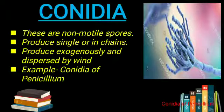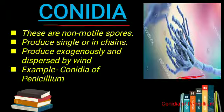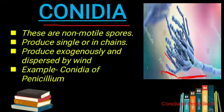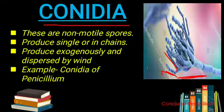Next, in spore formation, we look at conidia, whose best example is Penicillium — a type of fungus. An important difference from zoospores: the spores produced here are non-motile, meaning they are not able to move. These conidia are produced in chains and they are produced outside the body — exogenously. This is the example of conidia of Penicillium.